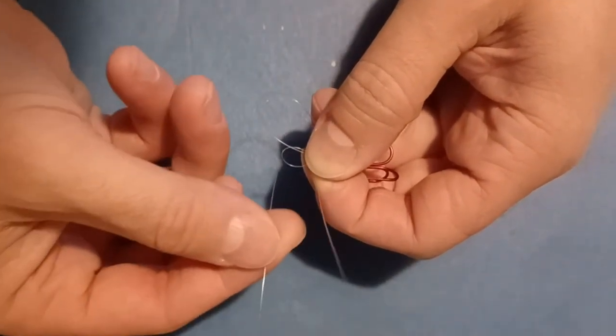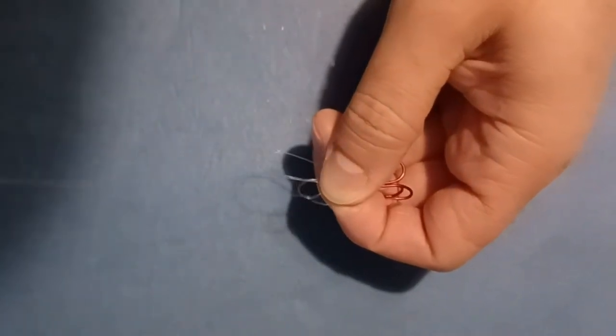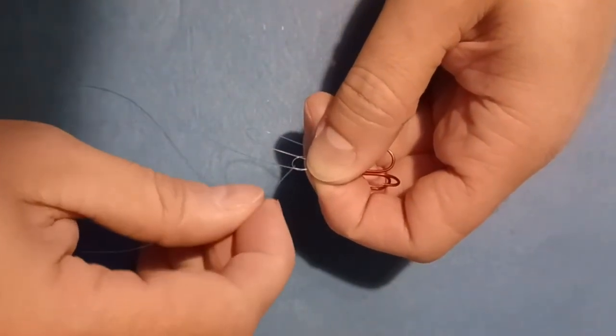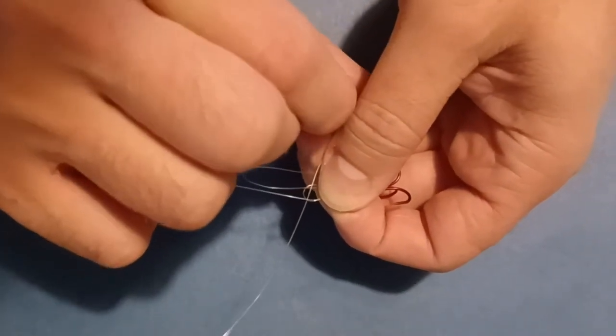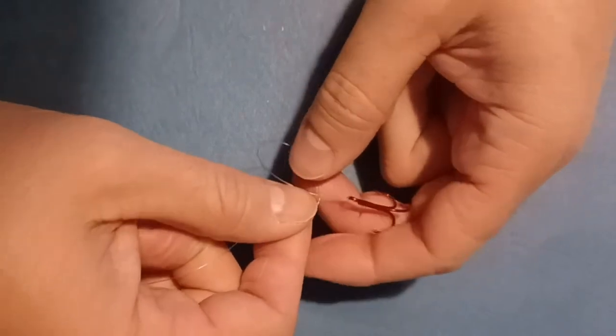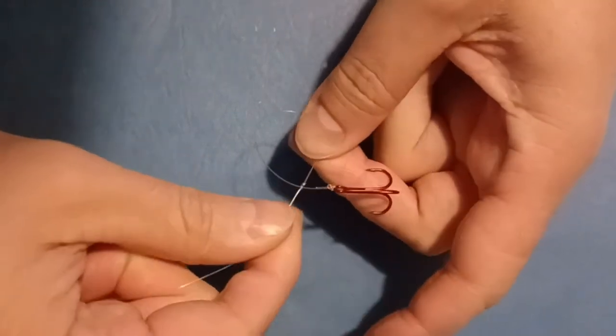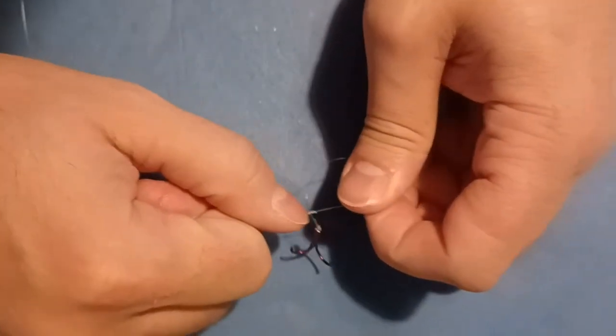I'm going to pass it through the bottom of that smaller loop two times. So there's one, and then we pass it through the bottom of that loop one more time. And at this point now, you can cinch that down. Don't forget to moisten it. I believe I forgot to do so, but that's, oh, there we go. So I did it after the fact. But typically you would moisten it. And then you can tie that tight.